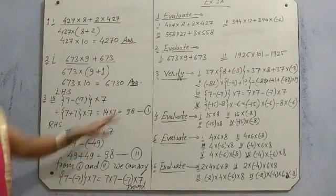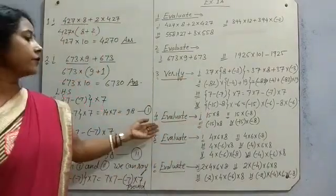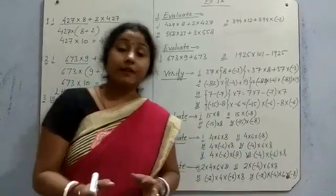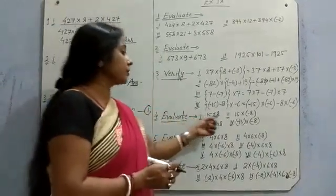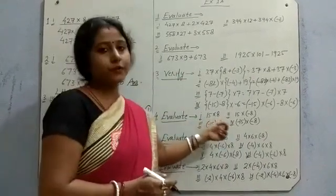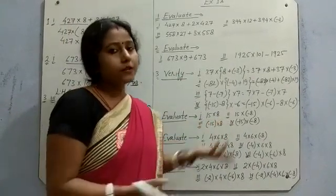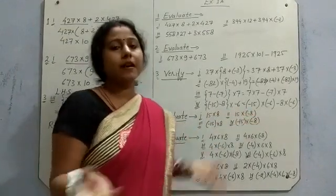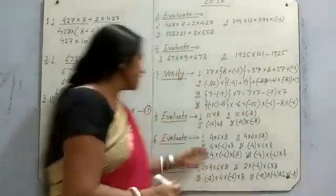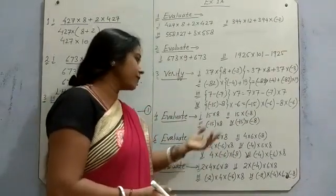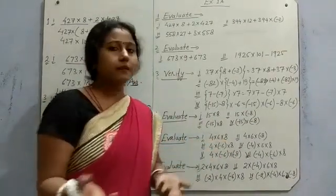So like this, we have to do rest of the questions. Fourth one is simply multiplication. You can multiply. You know how to multiply the integers. Two positive integers, if you multiply, positive integers will come. 15 into 8, 15 into 8 is 120. Simply you have to multiply. Here also. 15 into minus 7, that is minus 120. Same thing here. If you multiply 3 integers, 4 into 6 into 8. Multiply it simply.